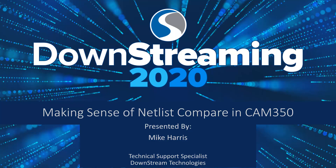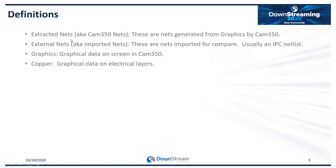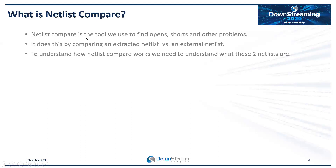Welcome to making sense of netlist compare in CAM 350. Before we get started, we should cover a few basic definitions. An extracted net, also known as a CAM 350 net, is a net generated by CAM 350 from graphics. An external net is the imported net we use for compare — usually an IPC netlist. Graphics is graphical data on screen in CAM 350, and copper is graphical data on electrical layers. Netlist compare is a tool used to find opens, shorts, and other problems by comparing an extracted netlist versus an external netlist.